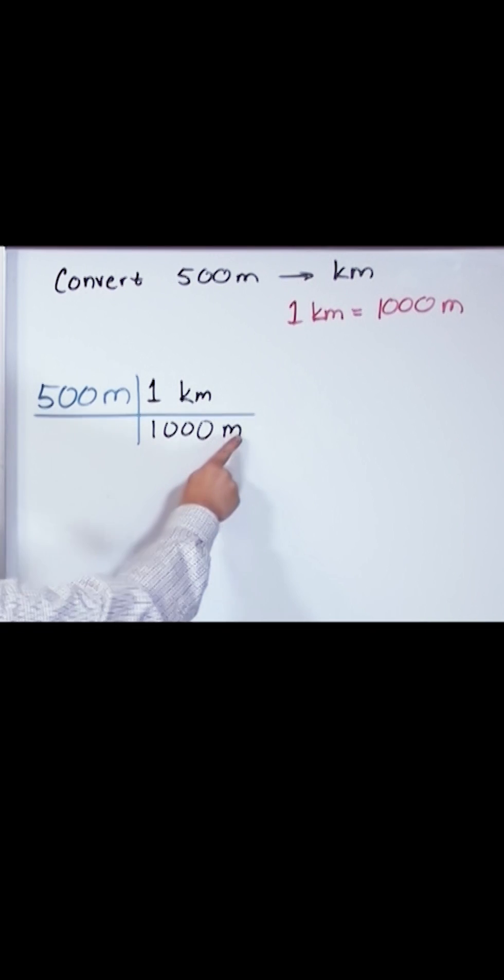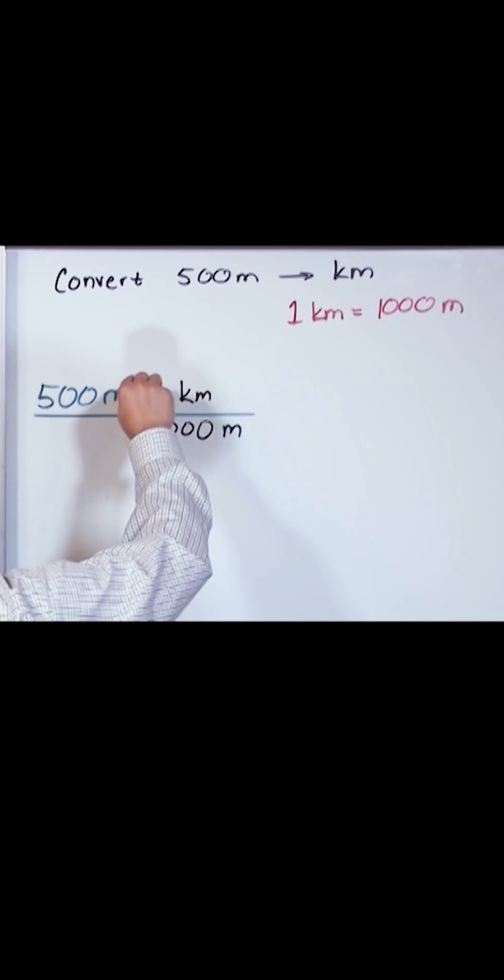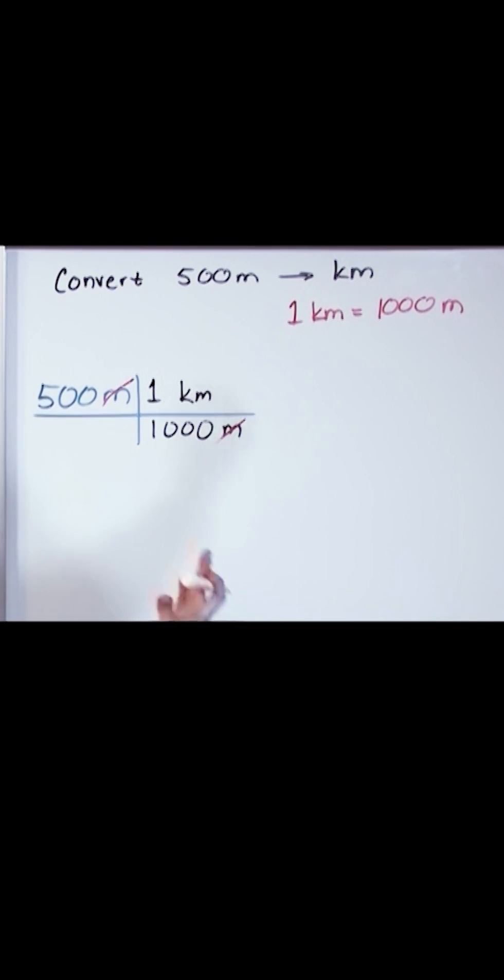So you see how we have meters on the top and meters also on the bottom here? What this allows us to do is cancel the meters with the meters. In effect, they're dividing out. The final unit we're going to have is not going to be meters because these have canceled.